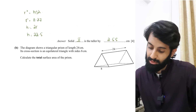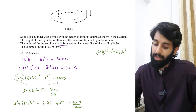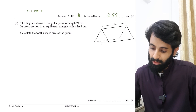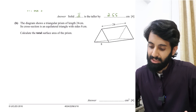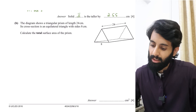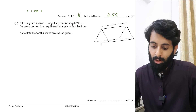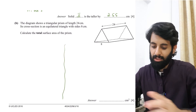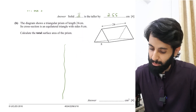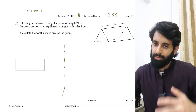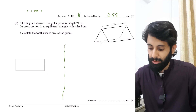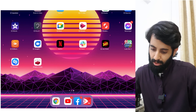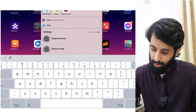Part b involves a triangular prism of length 24 centimeters whose cross-section is an equilateral triangle with sides 8 centimeters. This question covers three important shapes: a cylinder (a type of prism), a cone, and a prism. To find the total surface area, I'll identify that this prism is made up of three rectangles and two triangles.